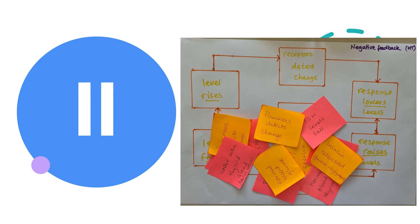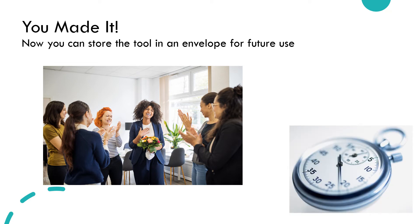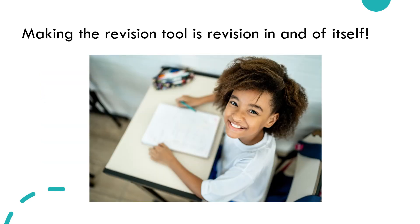Well done — you've now made your interactive tool. This should not have taken you more than 20 minutes, but now that you've made it you can use it repeatedly to help you remember some of the key stages in the control of blood glucose and the control of thyroxine. Making this is revision in and of itself. You are reviewing the source material and interacting with it as you read and copy the method of controlling blood glucose and thyroxine levels.